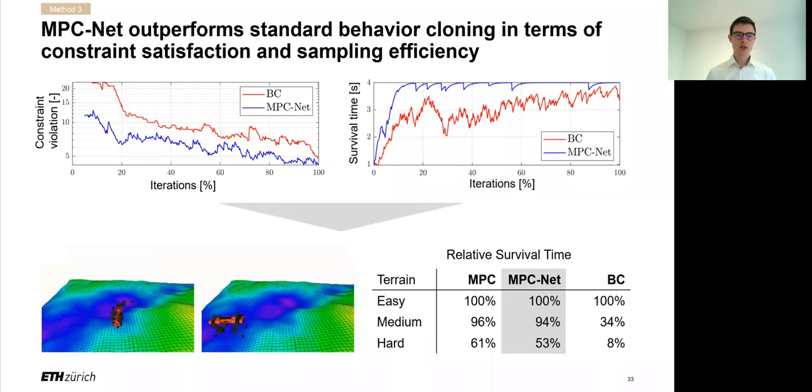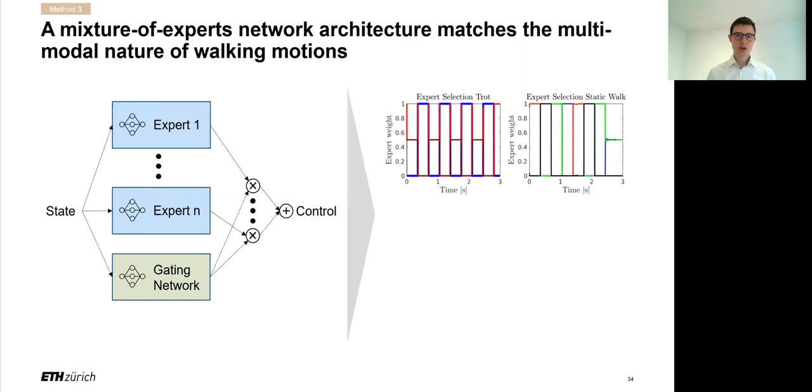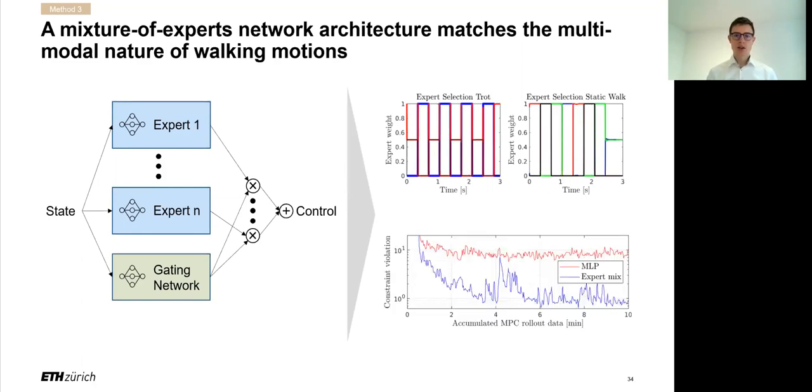But actually, just minimizing the control Hamiltonian was not even enough to produce those results for our quadrupedal robot. What we needed in addition was a special neural network control structure, which is here a mixture of expert architecture that matches the hybrid nature of the system. The control in this case is a linear combination of the controls proposed by sub-expert policies. And the gating network at the bottom here decides which expert should be active at each time and stage. Now, training this leads to a specialization of the experts where they focus on one specific contact configuration according to the gait. And this has an effect. The effect of the specialization is that compared to a multilayer perceptron, which we trained on the same Hamiltonian loss, we achieve a better constraint violation because each expert can now focus specifically on the constraints that are relevant for its contact phase.